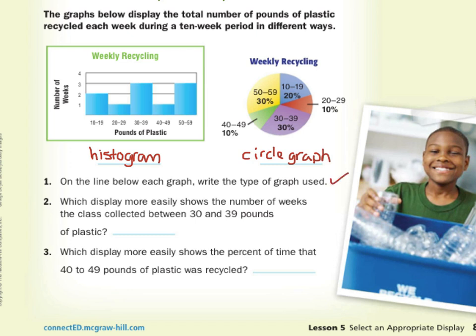Which display more easily shows the number of weeks the class collected between 30 and 39 pounds of plastic? Well, let's look. We have 30 to 39 pounds of plastic three weeks. We have 30 to 39, 30 percent of the time. I have no idea how many weeks that is. Well, actually, it's a 10-week period. And so if we do 30 percent of 10 weeks, that's 0.3 times 10, which is three. Well, I don't know about you, but I think the histogram, just looking over, was an easier way of showing how many weeks the class collected between 30 and 39 pounds. Here we had to calculate 30 percent of 10 weeks. Not that that's hard to do, but it's easier looking at the histogram.